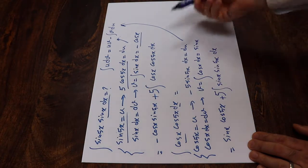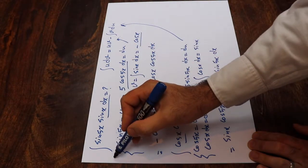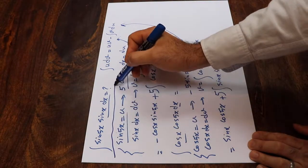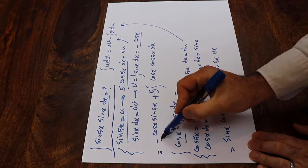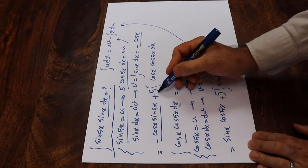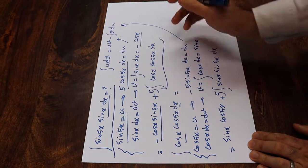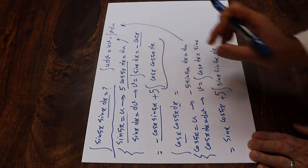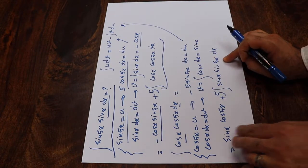So let's look at the original integral one more time. The original integral was this one, and it is equal to this term plus 5 times this integral. And this integral we just calculated is equal to that.